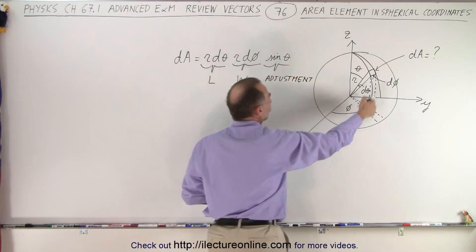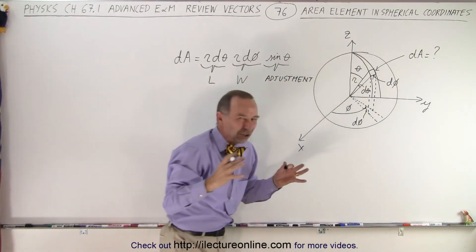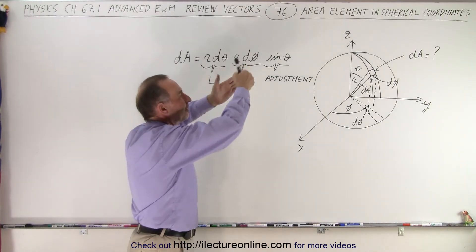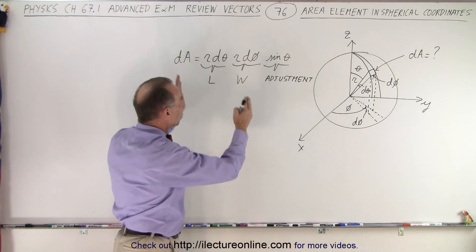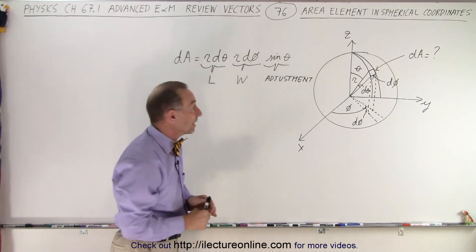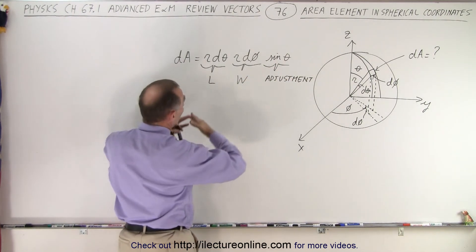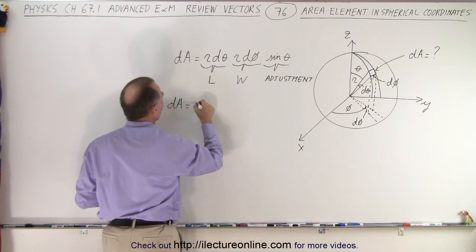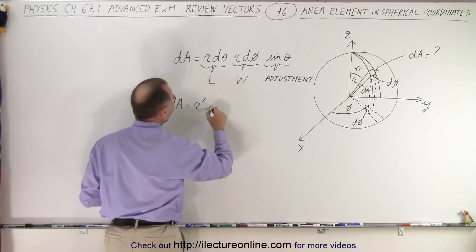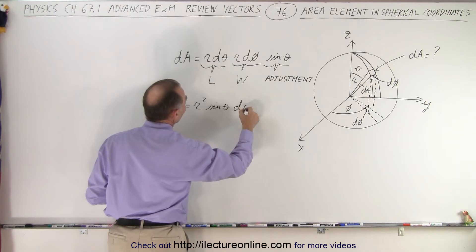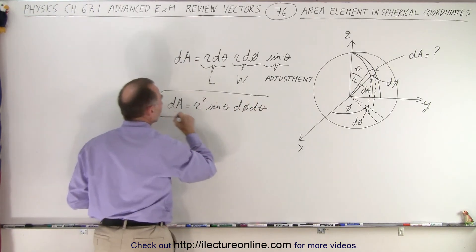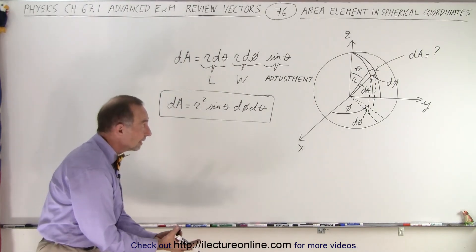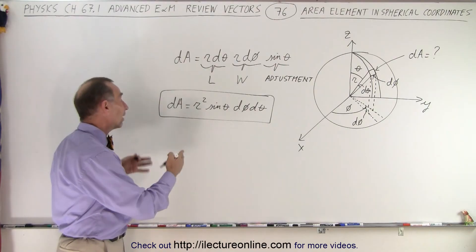We're looking for a trigonometric function where when the angle is zero it's zero, and when the angle is 90 degrees it's at its maximum — that's the sine of the angle. In this case the angle is theta, so we also have to multiply by sine of theta. This is the adjustment we need to make to compensate for the geodesic — the lines that would normally run parallel but converge to a point at the pole. So the area element is dA = r² · sin(θ) · dφ · dθ, and that's the area element on the surface of a sphere in spherical coordinates.